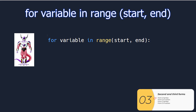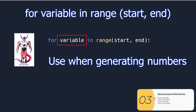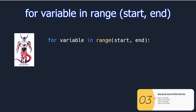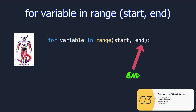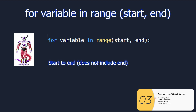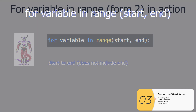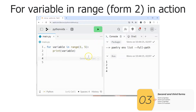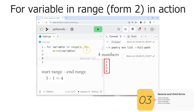That brings me to the second form of for variable in range. Inside the parentheses, instead of just one number I'm going to have two numbers — a starting number and an ending number. It will generate numbers from the start all the way up to the end, but not including the end. Here we have it in action: when I run the code, it prints numbers starting with one and ending before five. One way to think about this: five minus one equals four, which is the count of numbers generated.